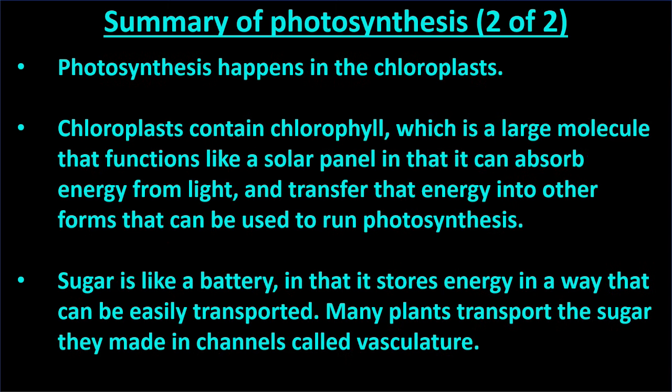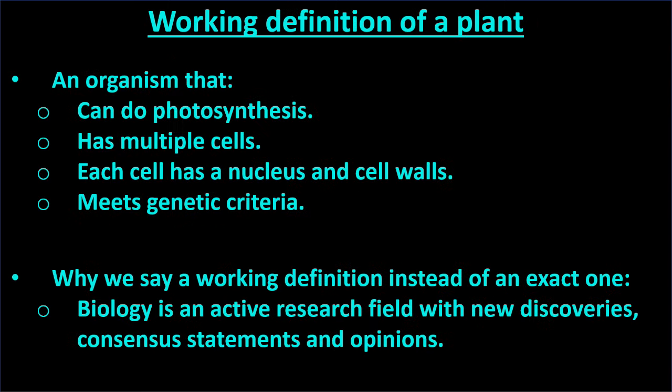Here is a summary of photosynthesis. Please pause the video if you wish. Now that we've seen a plant under a microscope, let's review a working definition of a plant. It is an organism that can do photosynthesis, has multiple cells, each cell has a nucleus and cell walls, and meets genetic criteria for being a plant. We call this a working definition because biologists often change classification criteria for organisms as new research becomes available.